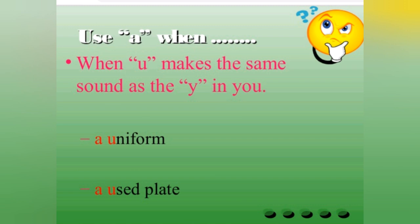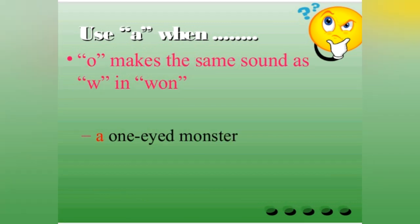There are some exceptions. Like we use a when u makes the sound of y in u. That is a uniform, a used plate. Here the y has a y sound. One starts with a vowel o, but it has a consonant sound w, just like a one-eyed monster, a one rupee note.